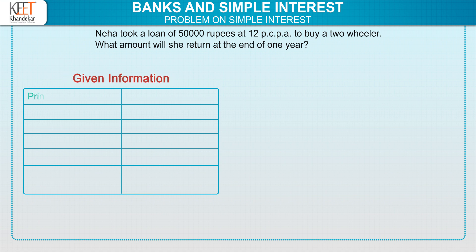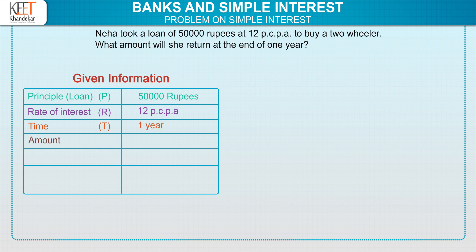So here we have principal, that is loan, denoted by P, is 50,000 rupees. The rate of interest denoted by R is 12% per annum. Time denoted by T is 1 year. Here we have to find the amount denoted by A, so put a question mark there.